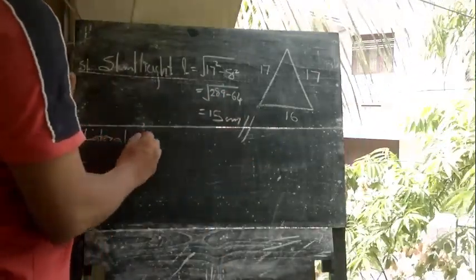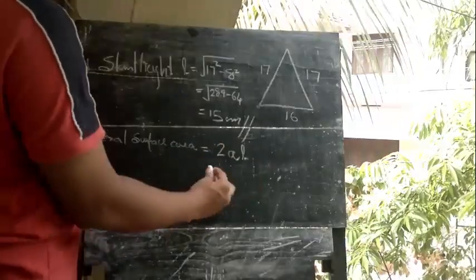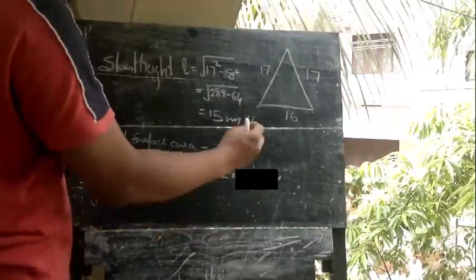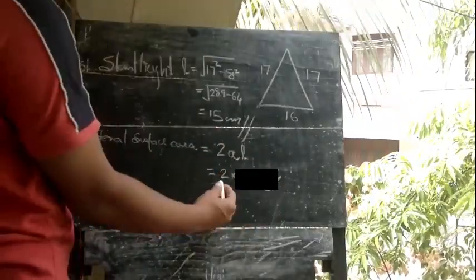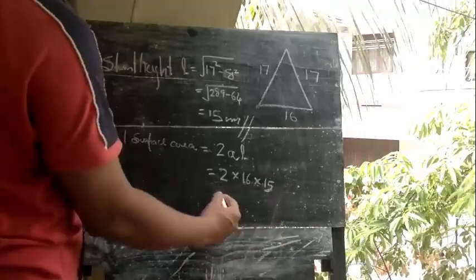Now we are going to calculate the lateral surface area. Using the formula 2 × a × l, we get 2 × 16 × 15, which gives us 4 × 8 cm.